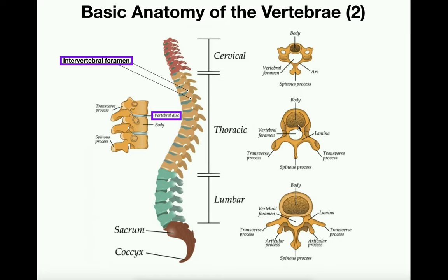Moving down to the thoracic vertebrae, the body gets a little larger — these are intermediate in size. Their spinous processes are oriented downward, especially as you get lower. The transverse processes are more like 90 degrees to one another. In contrast, the lumbar vertebrae have very large bodies, and their transverse processes are almost 180 degrees apart — around 160 to 170 degrees. The lumbar vertebrae also have much more prominent articular processes, both superior and inferior.